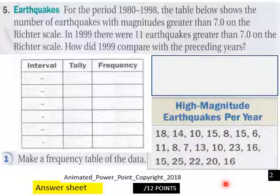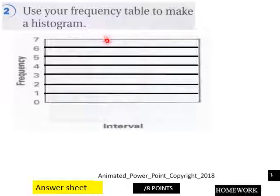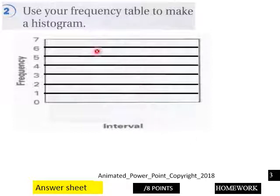You got 12 points here for page two. Page three, we have a frequency table here to make. Here's where you make your histogram from the previous frequency table.